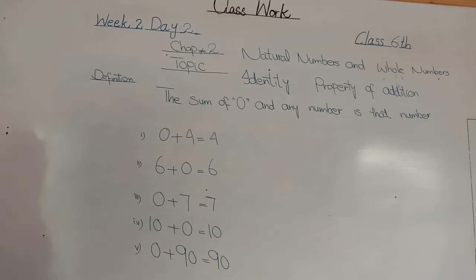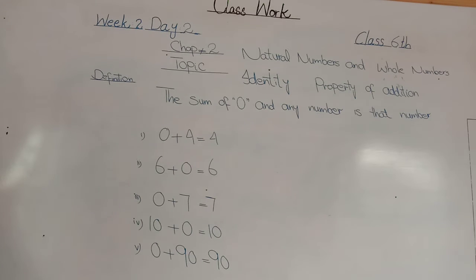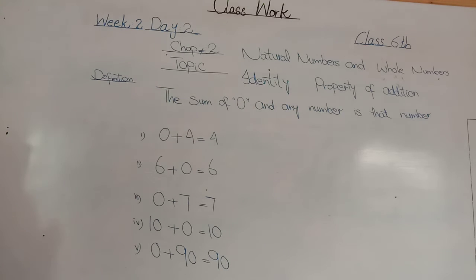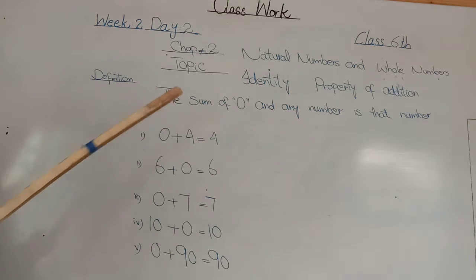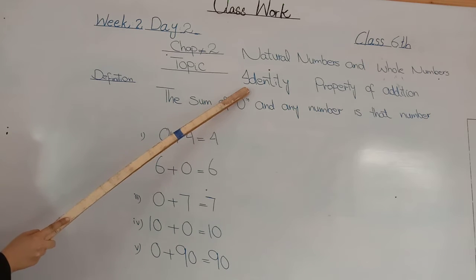I hope you have done the previous day's task. Previously we learnt about Associative Property of Addition, and with the hope that you have completed your task, I am going to start today's work — Identity Property of Addition. We have already learnt about Commutative Property and Associative Property; now this is the 3rd property of Addition, that is Identity Property of Addition.